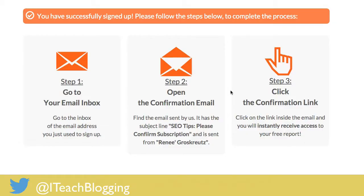Now let's talk quickly about the purpose of this page. So if you are doing a content upgrade, you want somebody to sign up for your email newsletter and in exchange you're going to give them a downloadable PDF. The process they go through is a two-step opt-in, which is what is normally done these days for newsletters.